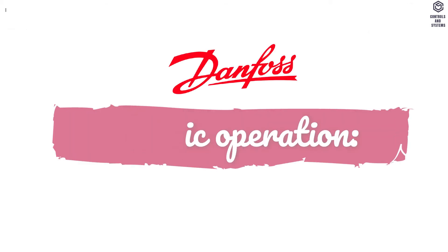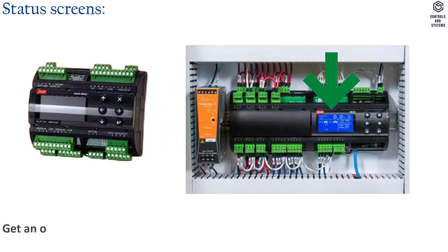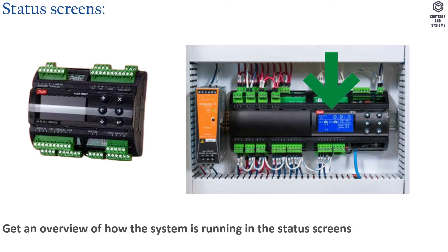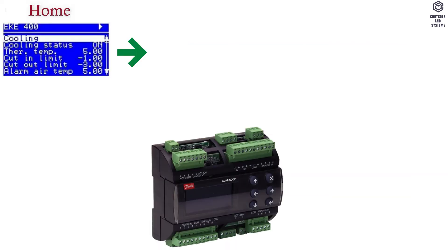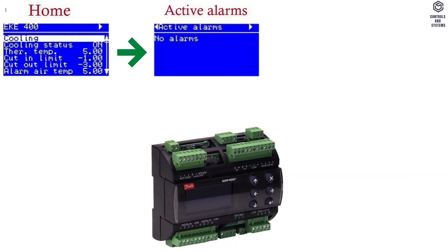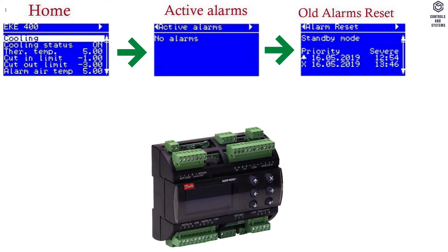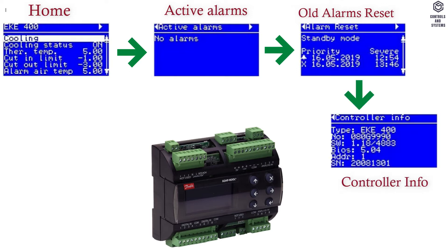Basic operation — status screens. Get an overview of how the system is running in the status screens. Use the left and right buttons to view the status screens: the home screen, active alarms screen, old alarms reset screen, and controller info screen.